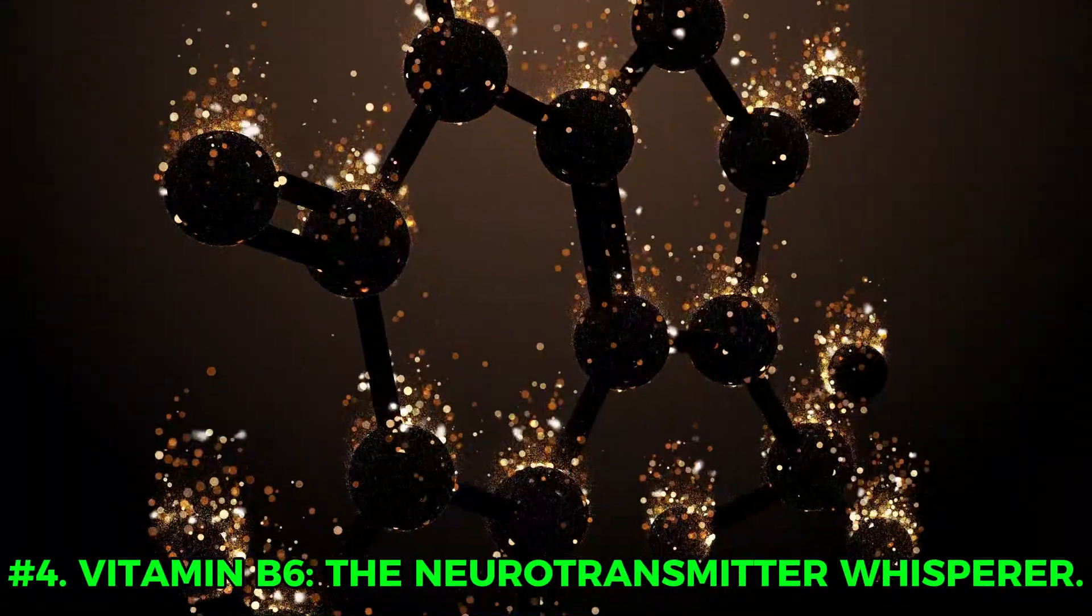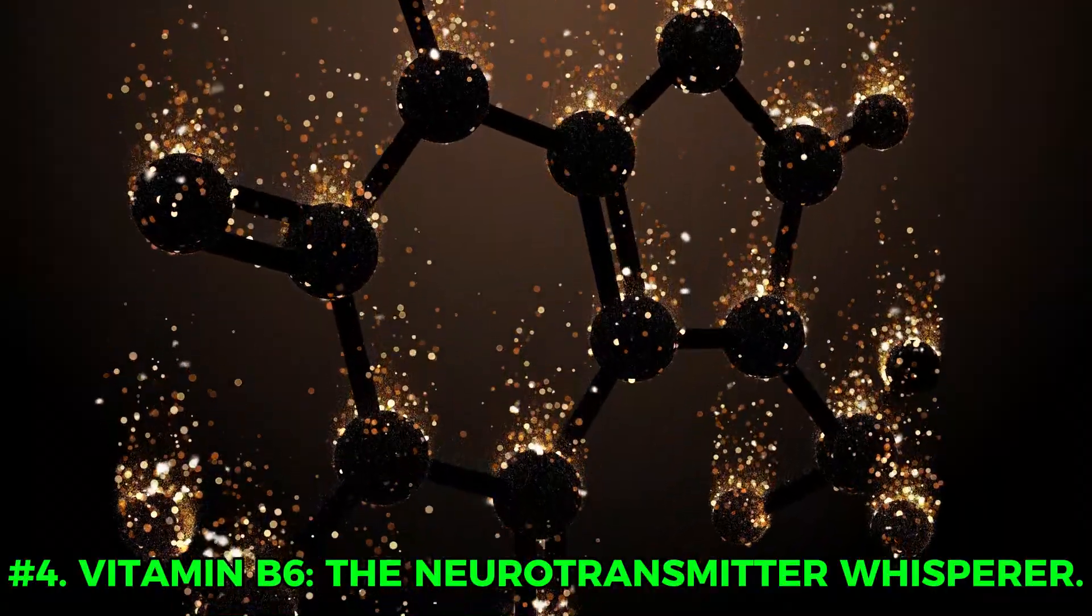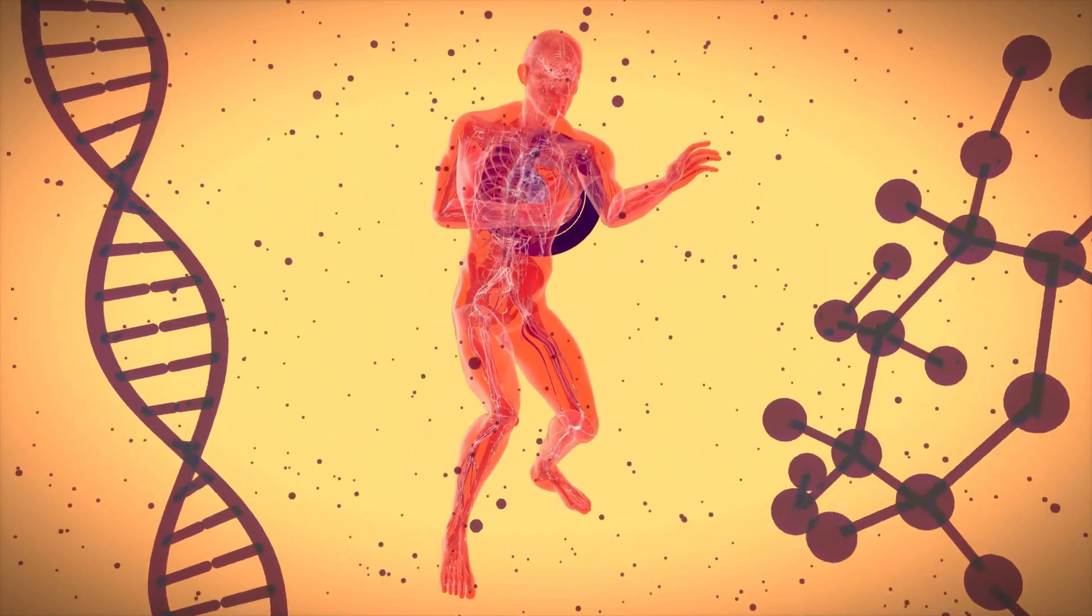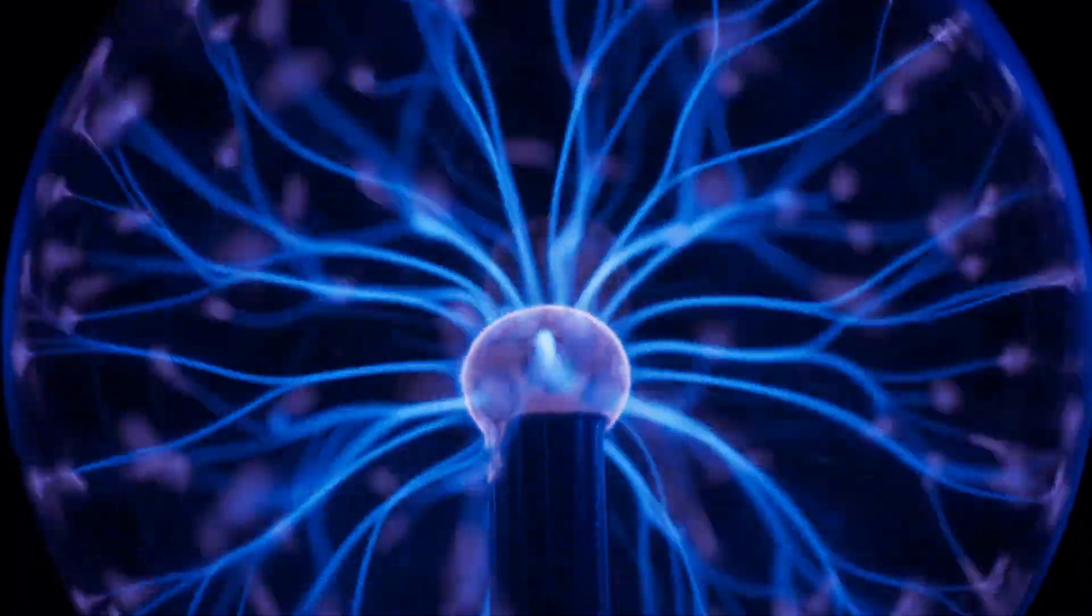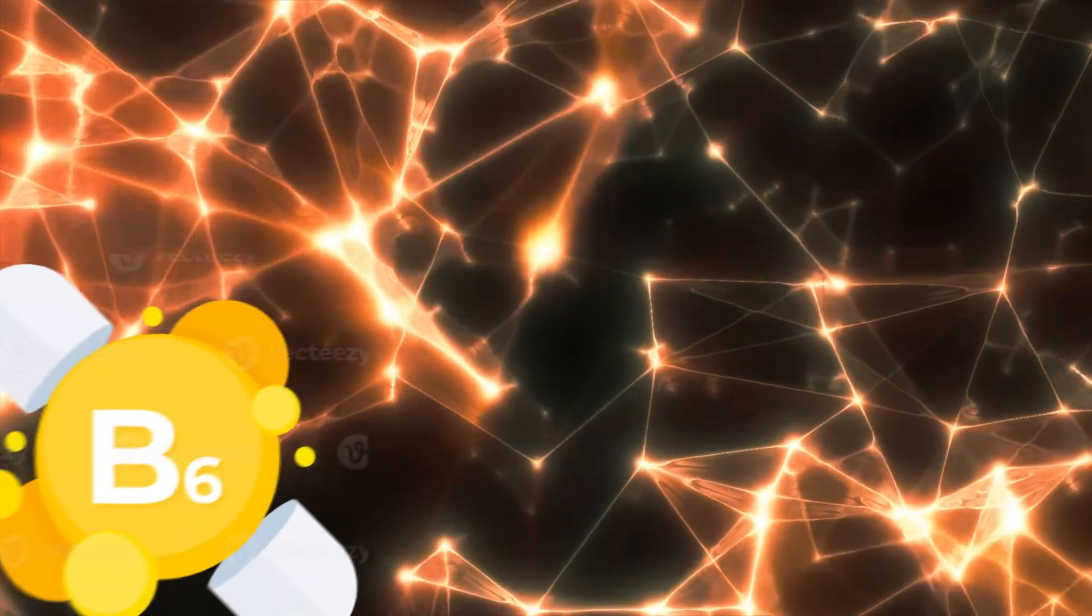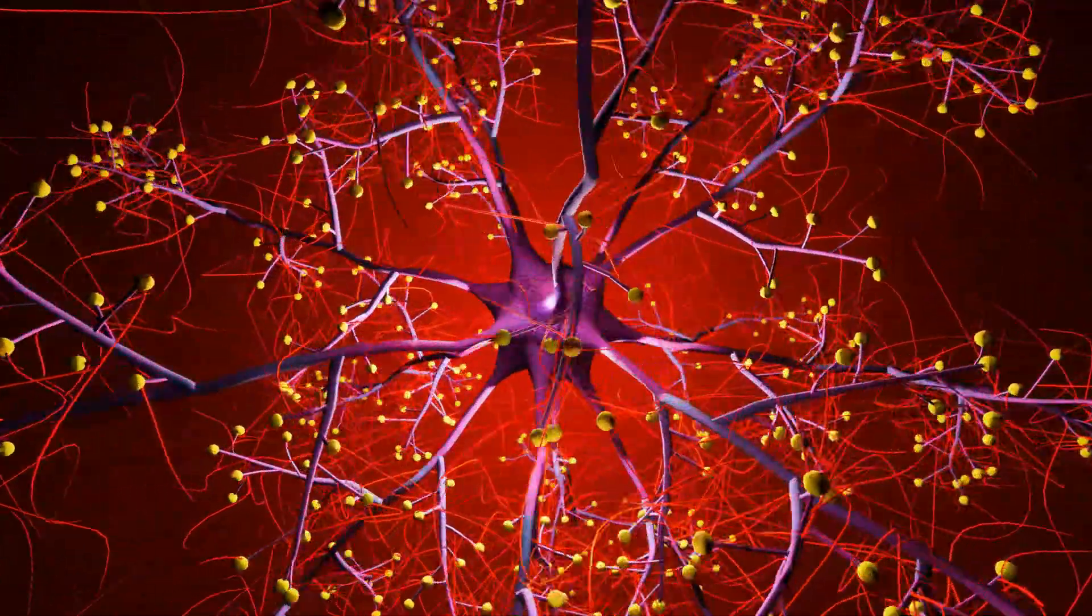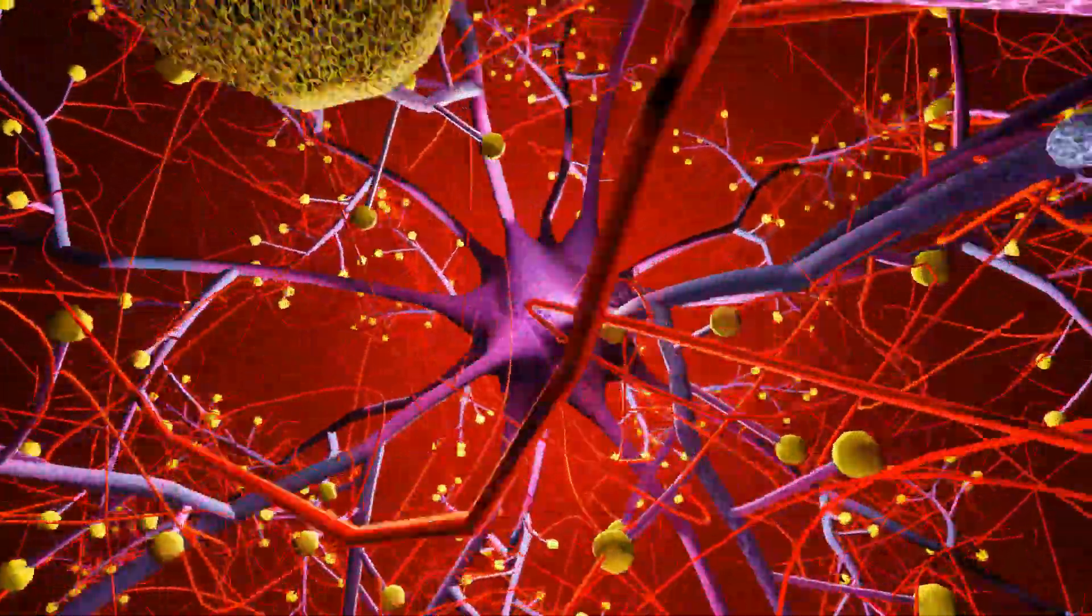Number 4: Vitamin B6, the neurotransmitter whisperer. If B12 is the mechanic and B1 the fuel guy, B6 is the translator for your nervous system. Known as pyridoxine, B6 plays a starring role in synthesizing neurotransmitters—those chemical texts that nerve cells send each other to keep things running smoothly.